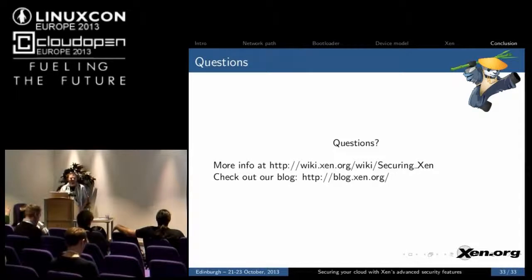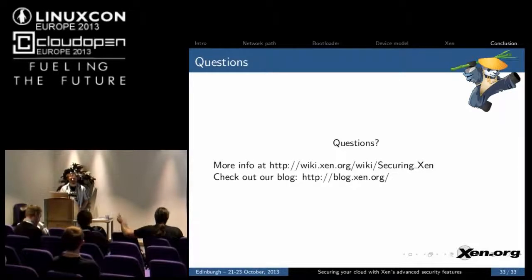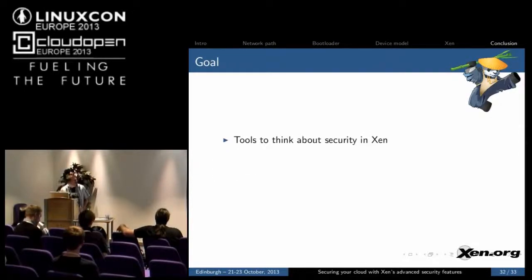Question about stub domains: what is the relation with the base system? On the schema shown, when you get into the stub domains and enter it, there are interfaces on the zero. What is the relation between them — can the backend be accessed afterwards?